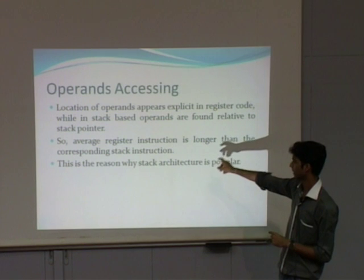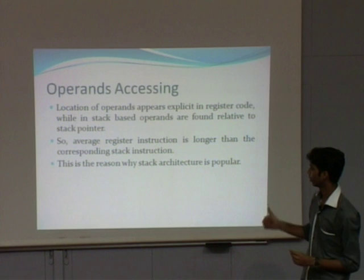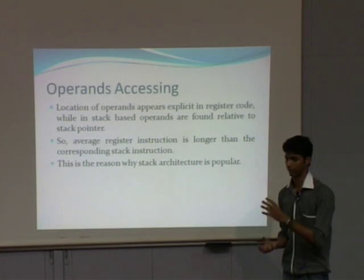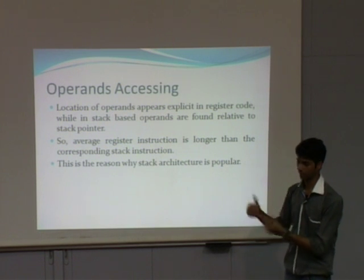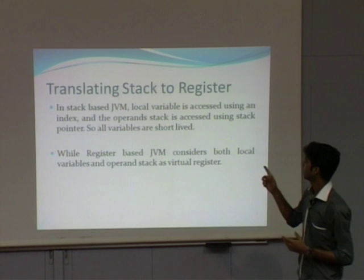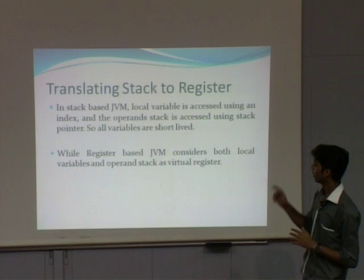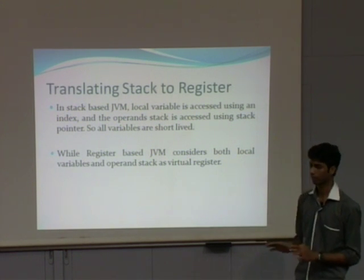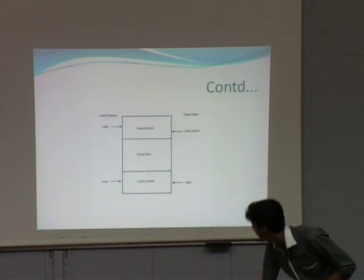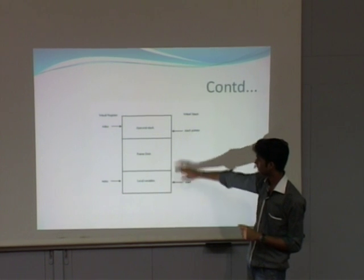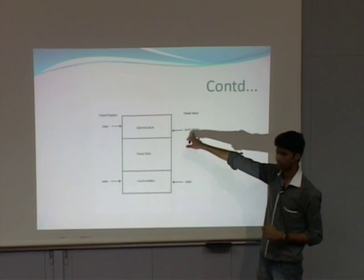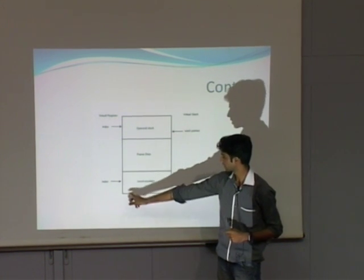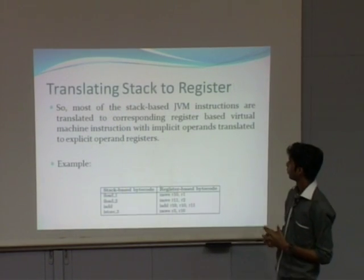Since the instruction size increases, stack architecture was more popular initially, but later we found that the decrease in number of instructions outweighs the increase in size. In stack-based JVM, local variables are accessed using an index while the operand stack is accessed using a stack pointer. In register-based JVM there is no concept of a stack — everything is accessed with registers only. In a stack-based JVM frame, we have local variables, frame data, and an operand stack accessed via index and stack pointer, while in Dalvik virtual machine both local variables and operand stack are accessed using an index only.